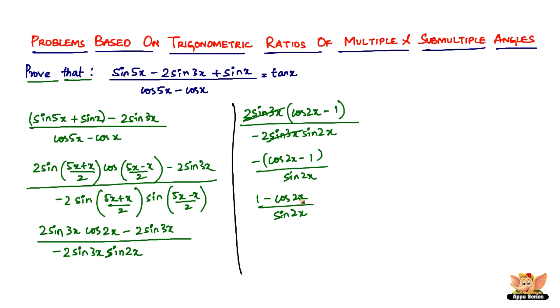So now what you can write is 1 minus cos 2x is nothing but 2 sine square x, right? 1 minus cos a is 2 sine square a. So in this case, it's 1 minus cos 2x. This is equal to 2 sine square x divided by sine 2x, which is nothing but 2 sine x cos x. So 2 gets cancelled, one sine and one sine gets cancelled. So what we've got left is sine x divided by cos x, which is nothing but tan x, and that is the right-hand side.